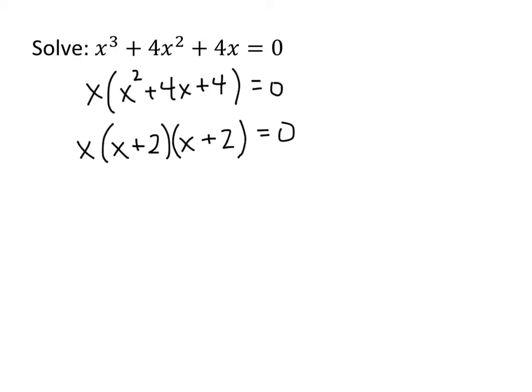So now we've got a product of three numbers that equals 0. This number times this number times this number equals 0. But the property of 0 is still true. The only way you can multiply numbers together and get an answer of 0 is if one of the numbers you multiplied is 0.